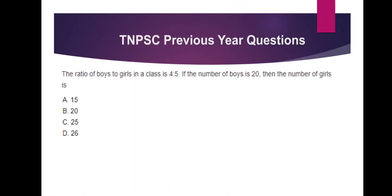The ratio of boys to girls in a class is 4 to 5. Number of boys is 20. So 40 to 20 and 50 to 5. Therefore 40 to 20 and 50 to 25. Option C is the answer.